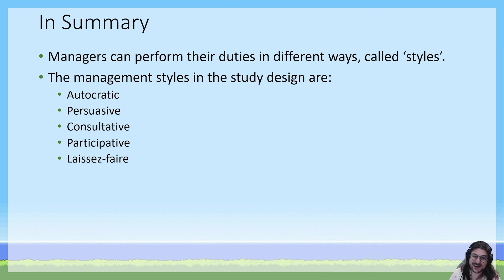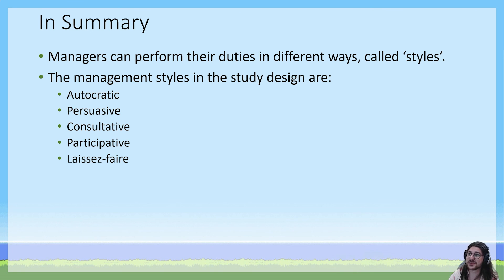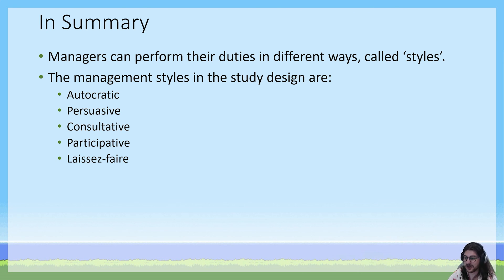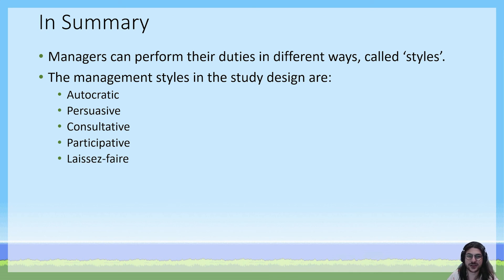In summary, for this key knowledge point, there are five different flavors of manager — we call these management styles. The five styles listed in the study design are autocratic, persuasive, consultative, participative, and laissez-faire management. These go from the most restrictive, where the manager retains all control and employees have no authority, to laissez-faire, where employees are completely empowered and trusted to make decisions, and the manager is just there to help empower them and give them whatever they need to get their jobs done. That's all for today — see you next time.